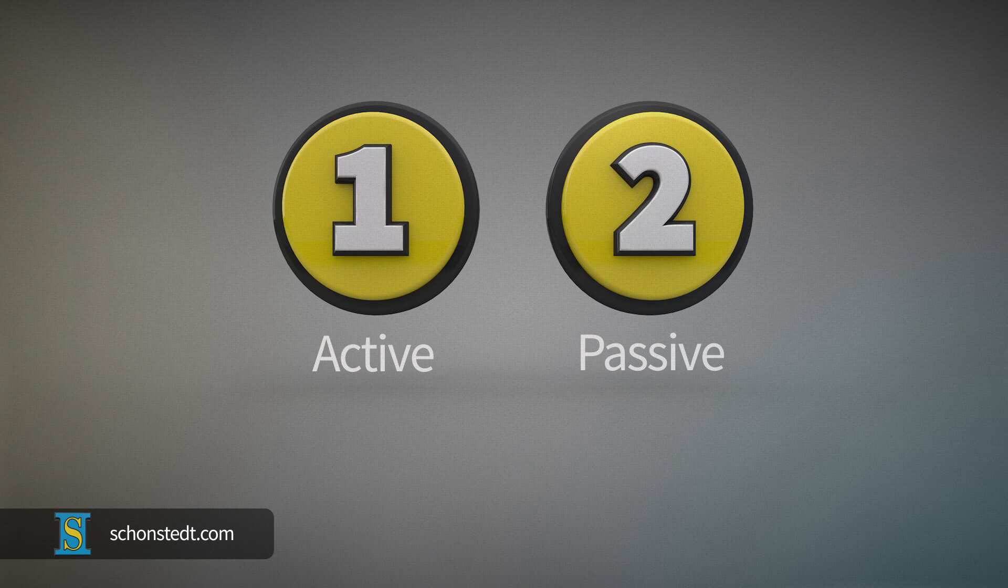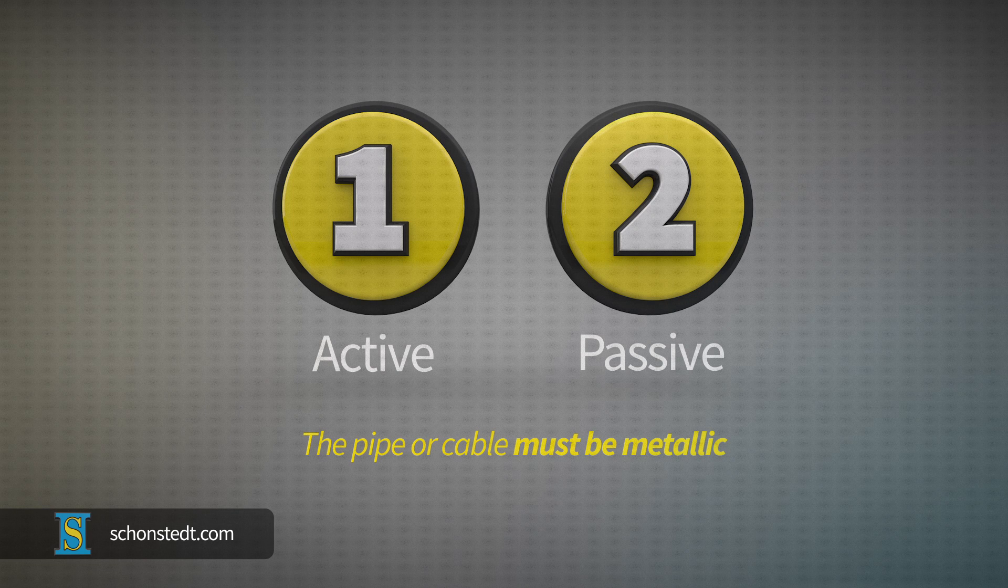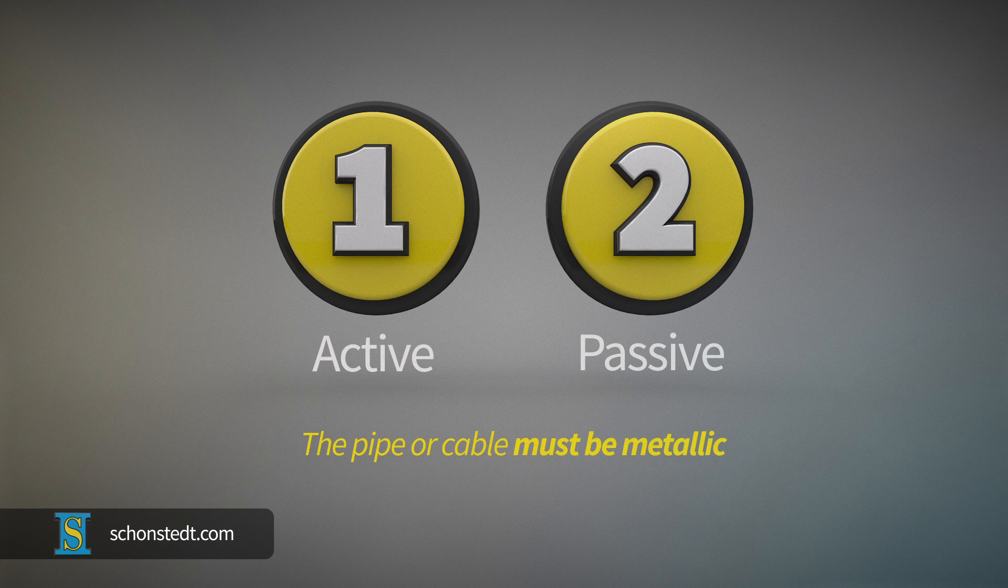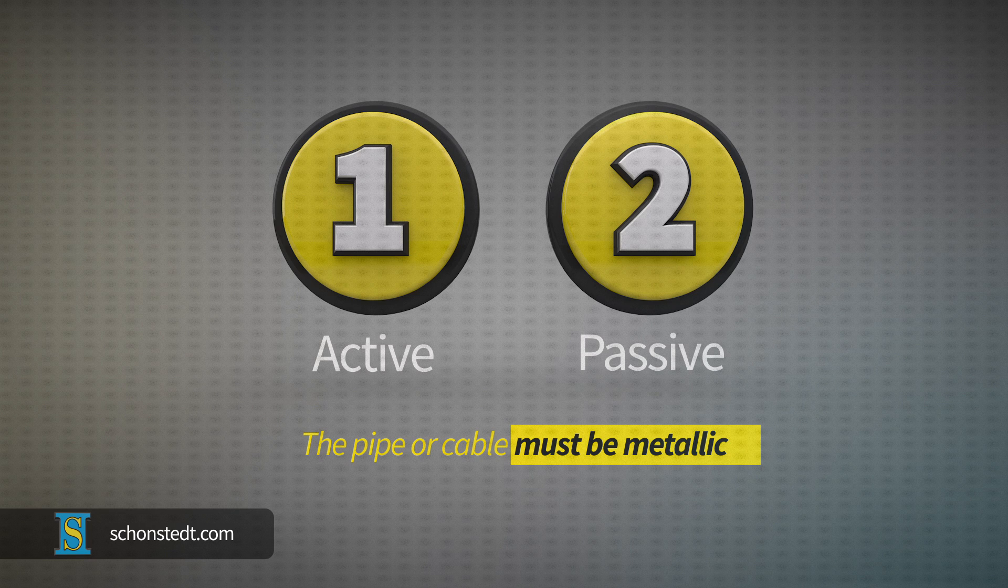There are two methods of pipe and cable locating, both of which require the pipe or cable to be able to conduct electricity. In other words, they must be metallic.